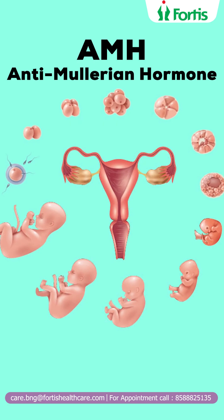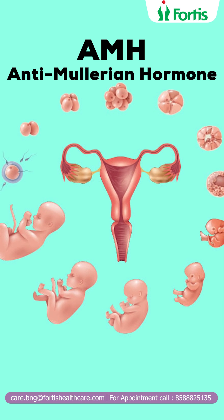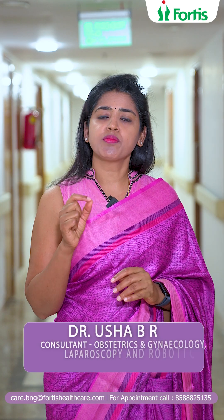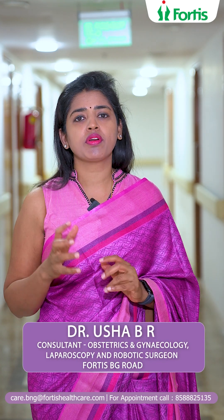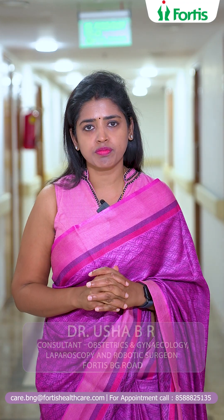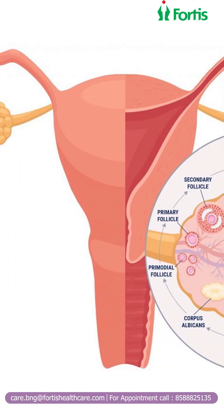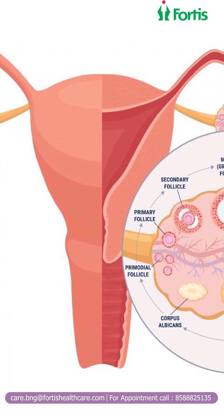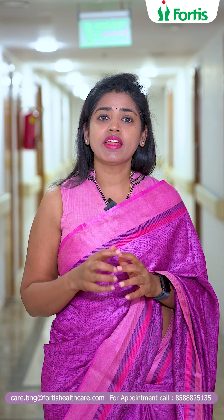What is AMH, or anti-mullerian hormone? This is a hormone produced by your ovary during the reproductive age group. It indirectly tells you how many eggs could be produced from your ovary and what is the quality. This is very important to prognosticate the conception rates.